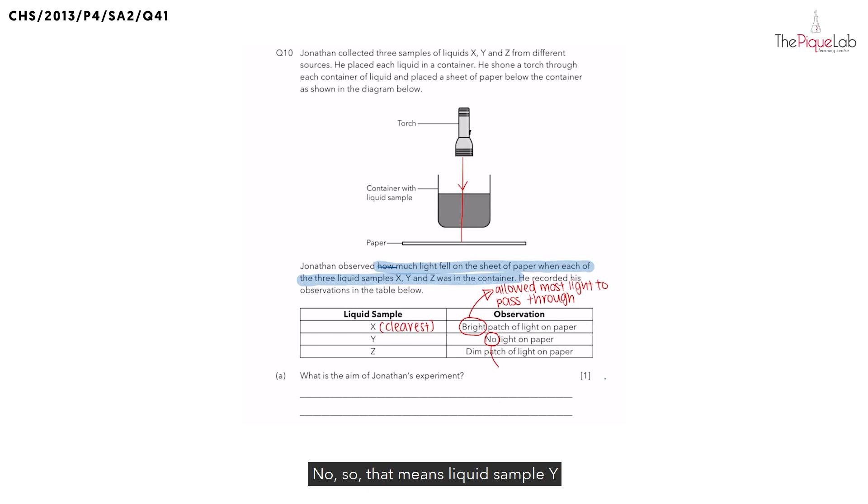So that means liquid sample Y did not allow light to pass through. Since liquid sample Y did not allow any light to pass through, what can we conclude about liquid sample Y? Would it be the clearest or the muddiest? This time we can say that liquid sample Y must be the muddiest.